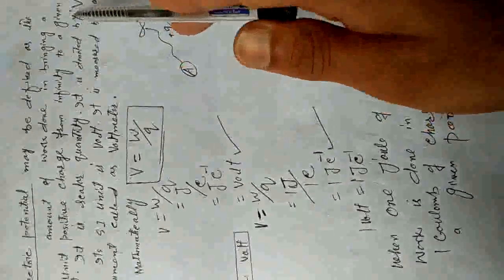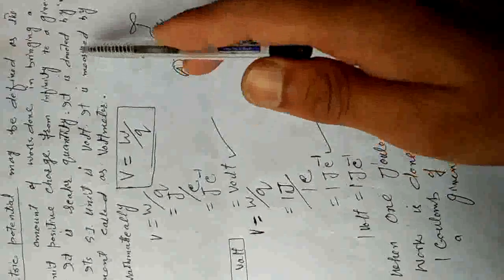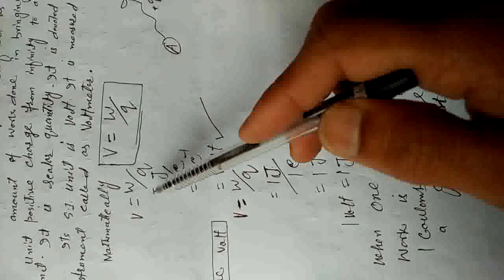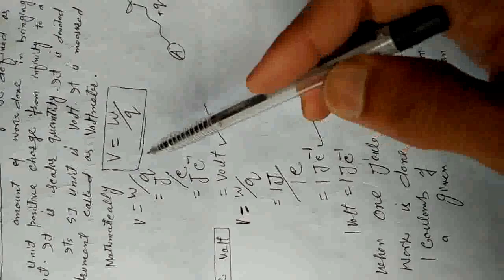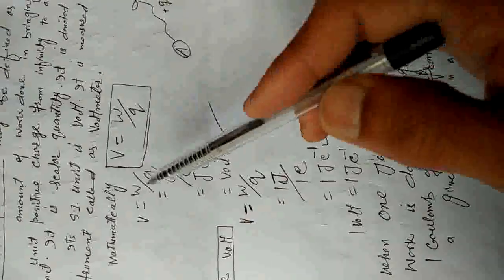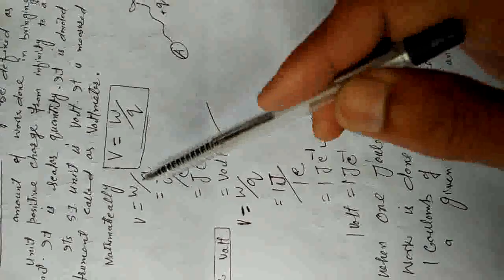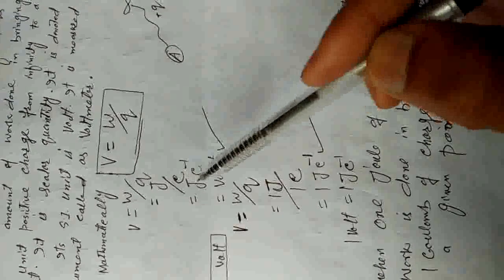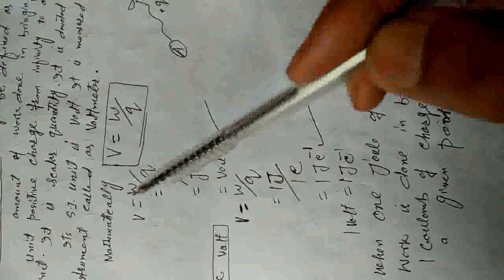To recapitulate: electric potential may be defined as the amount of work done in bringing a unit positive charge from infinity to a given point. It is a scalar quantity, denoted by capital V, its SI unit is volt, measured by a voltmeter. Mathematically V = W/Q, where W is work (unit: joule) and Q is charge (unit: coulomb), so joule per coulomb equals volt.